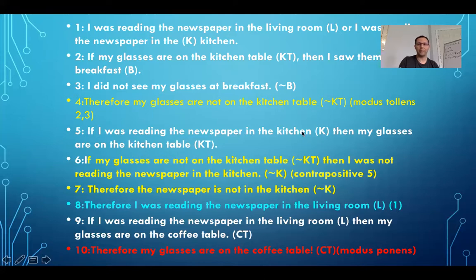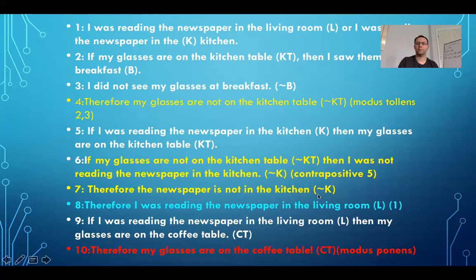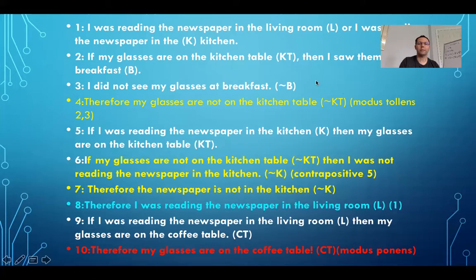Number five: if I was reading the newspaper in the kitchen, then my glasses are on the kitchen table. But wait — that means if my glasses are not on the kitchen table, then I was not reading the newspaper in the kitchen. That simply is the contrapositive. When we make use of contrapositives, we either state them directly, or take one step with modus tollens. So we know that the newspaper is not in the kitchen. Therefore, I was reading the newspaper in the living room. Number one says I was reading in the living room or I was reading in the kitchen, and I just figured out I wasn't reading in the kitchen. Therefore, I must have been reading the newspaper in the living room — that's called the disjunctive syllogism.